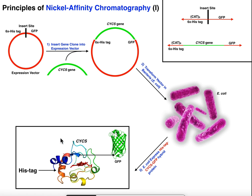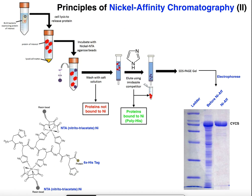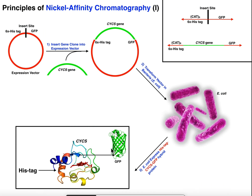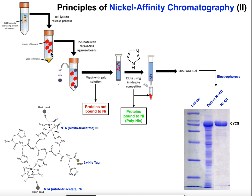This E. coli will now express the protein. To isolate cytochrome c, I can use the histidine tag in nickel affinity chromatography. First, I take the bacteria, lyse them, and that releases the protein of interest — cytochrome c with the GFP and histag. Then I incubate this sample with what's called nickel NTA agarose beads. NTA stands for nitrilotriacetate.